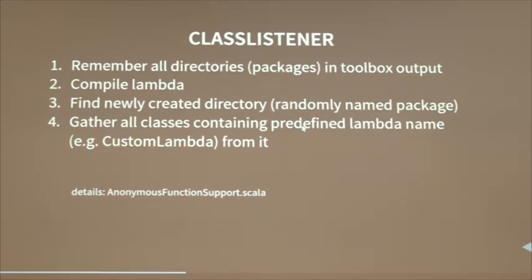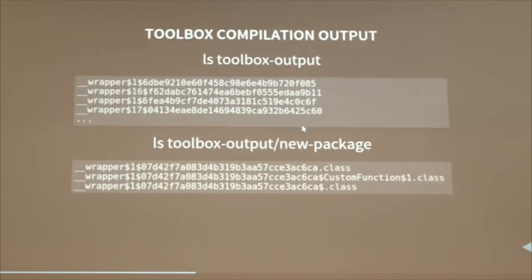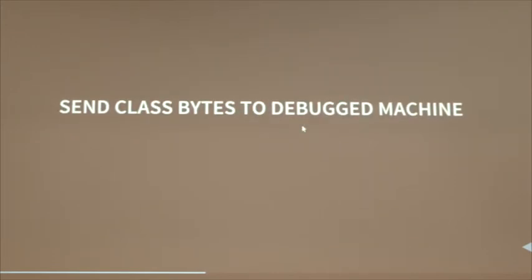We need bytecode. So we remember all directories and packages from the Toolbox output, compile our lambda, and find the newly generated directory — because Toolbox, when compiling code, creates a random package name and stores all the classes there. We gather the classes and find all classes marked with our marker, for example 'custom lambda'. Because a lambda may have another nested lambda inside, we have to grab all those classes too. That's basically how the Toolbox compilation output looks — long and boring names.